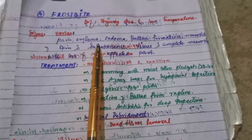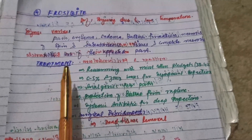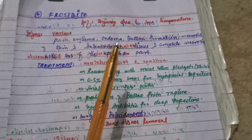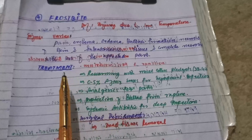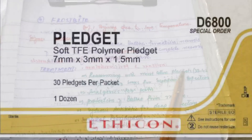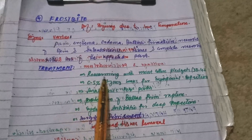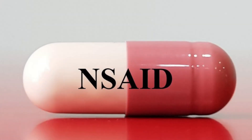There are two types of treatment: medical treatment and surgical treatment. Since frostbite injury is due to low temperature, we rewarm the affected part. Rewarming is done with moist cotton pledgets at a temperature of 30 to 42 degrees Celsius. To prevent superficial infection, apply 0.5 percent silver nitrate. Pain can be controlled with analgesics like NSAIDs, and to prevent deep infection, systemic antibiotics are used.